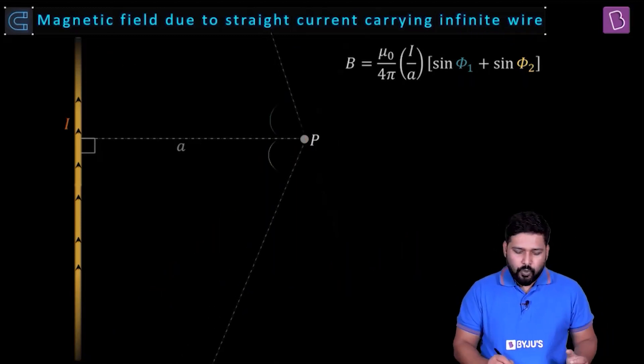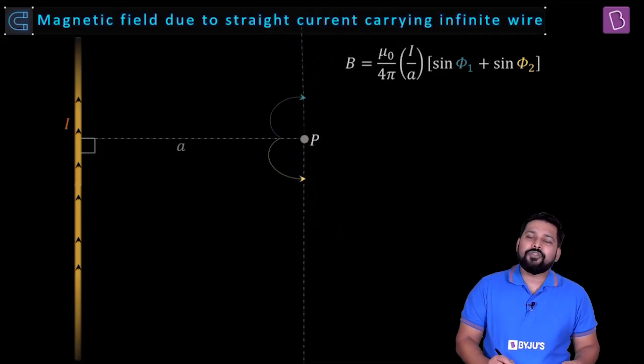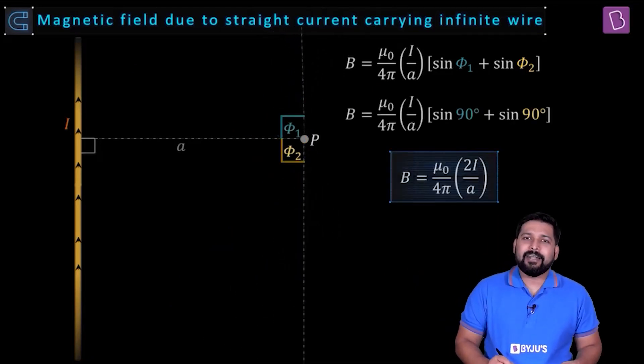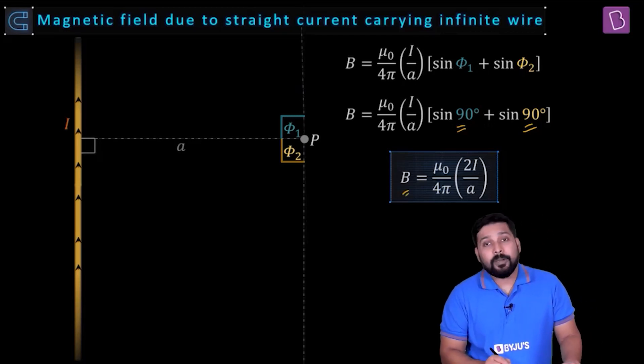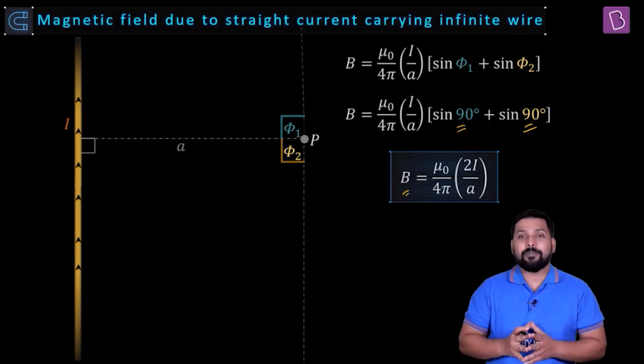As we know that if you go on increasing the length of the conductor such that this current carrying wire extends up to infinity, then the value of phi 1 and phi 2 will become equal to 90. And if that becomes equal to 90, then the result that we have changes slightly: B is equal to μ₀ by 4π, 2 times I divided by a.